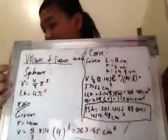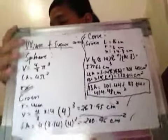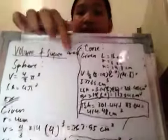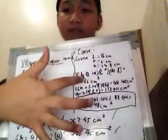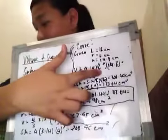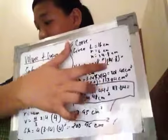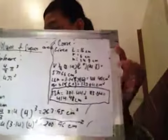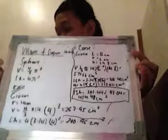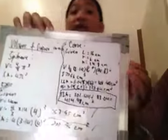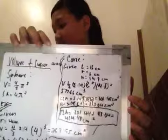The volume is 1 divided by 3, 1 divided by 3 times 3.14, then the 6 squared equals 6 times 6, then times 14.8 equals 577.66 cm cubed.